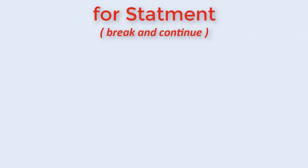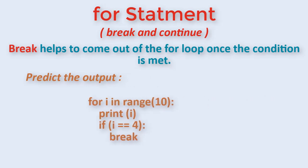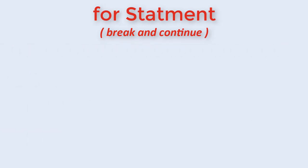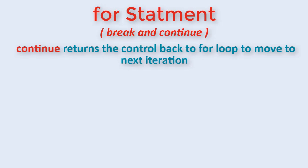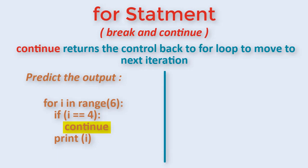We also have break and continue which work along with the for loop. Break helps to come out of the loop once the condition is met. For example, if we specify break in the for statement, it will print only till 4 and then come out of the loop. Similarly, continue does not break out of the loop but returns control back to the for loop to move to the next iteration. Here, the print statement is not executed when i is equal to 4, but the loop continues and prints for all remaining numbers. You can expect questions on predicting the output using these two.